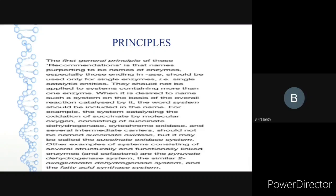Every creature on earth has a name, and that name depends upon some principle. Similarly, enzyme classification and nomenclature depend upon principles. The first principle is ending the name of the enzyme with '-ase'. This should be used only for single enzymes with single catalytic entities and should not be applied to systems containing more than one enzyme, when naming based on the overall reaction catalyzed.